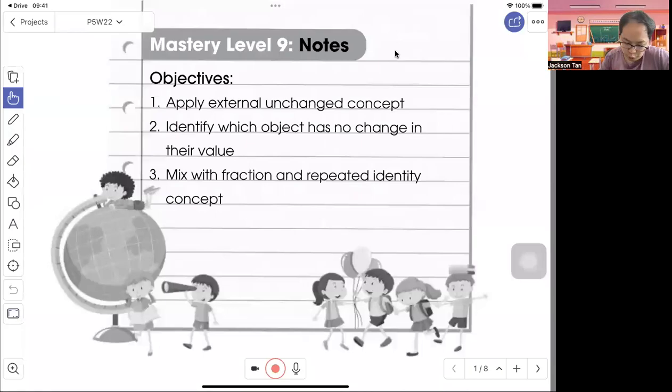Welcome to P5 Ratio Work Problem. In Mastery Level 9, the objective is to apply a standard unchanged concept, identify which object has no change in the value, and use reflection and repeated identity concept.